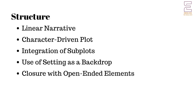Structure. Linear narrative: the story follows a linear structure, tracing Chandran's life through college, his love affair, his period of wandering, and his eventual return to a conventional life. This chronological progression aids in depicting the character's growth and development. Character-driven plot: the structure of the novel is largely driven by Chandran's character development, with key events and interactions framed around his personal journey from adolescence to adulthood. Integration of subplots: while the main focus is on Chandran, the novel also weaves in subplots involving his family, friends, and other inhabitants of Malgudi, enriching the narrative and providing a broader picture of the societal context.